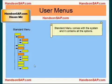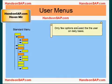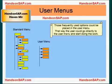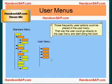What you can do is extract those options that users frequently use and put them into a user menu. The standard menu contains all the options that come with the system, while the user menu contains only those options the user uses daily. This saves the user time — when they log in, they can go directly to the user menu and see only the options they're interested in. That is the concept of a user menu.